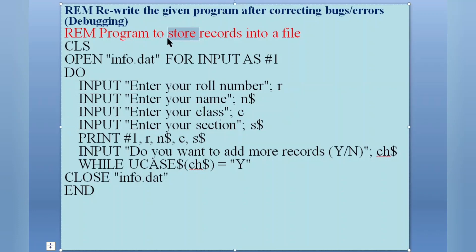Let's see the program. CLS, fine. OPEN info.dat - this is the file name - for INPUT. Input is used to read the data from the file, not to restore. So to store the data, what we need to use? We need to use output mode. So OPEN info.dat FOR OUTPUT AS #1.